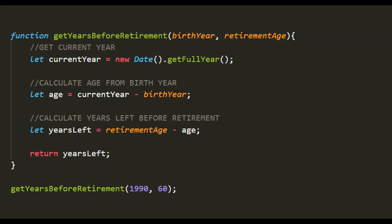Here we have a very simple function called getYearsBeforeRetirement. This function takes two parameters: the birthYear parameter and the retirementAge parameter. When we are calling this function, we are passing values for these two parameters. The value 1990 will be assigned to birthYear, and 60 will be assigned to retirementAge. Based on these two values, this function calculates the number of years left before retirement for a person.